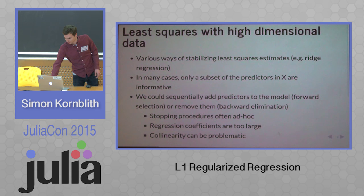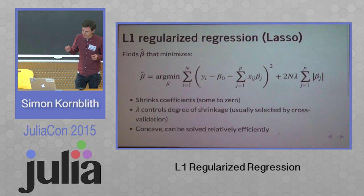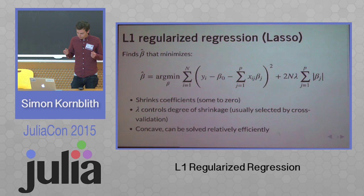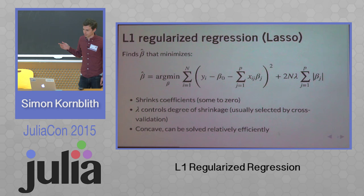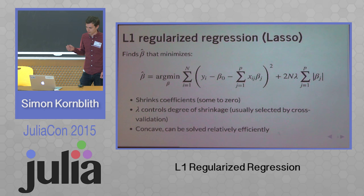A technique that's become very popular — dating back to the mid-90s — is called lasso. The idea is that you modify the objective you're trying to optimize. Instead of just minimizing the sum of squared residuals, you minimize the sum of squared residuals plus a penalty term, which is the sum of the absolute values of the coefficients multiplied by some constant lambda. This ends up shrinking the coefficients, and it actually shrinks some to zero. The lambda parameter controls the degree of shrinkage, and usually people pick it by cross-validation, which works very well.